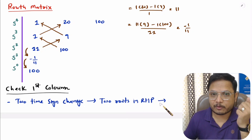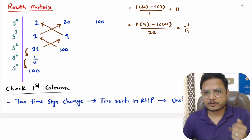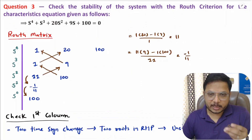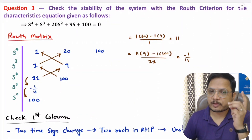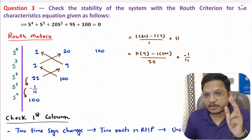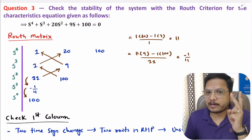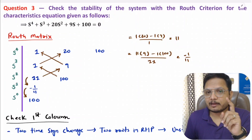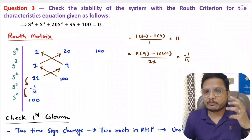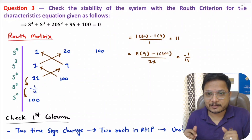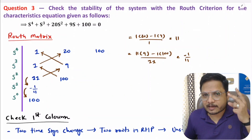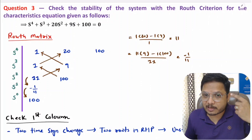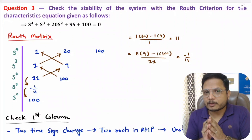This means we have an unstable system. To summarize, always remember the three steps: first, identify the characteristic equation; second, identify the Routh matrix; third, check the first column for sign changes. There are also special case studies in Routh-Hurwitz criteria that I will explain in future videos with examples. Thank you for watching.